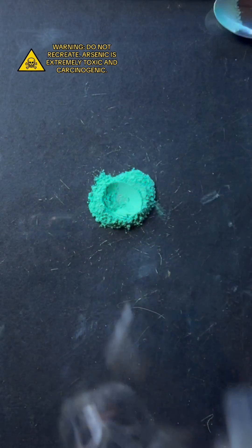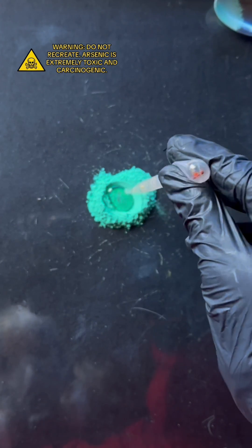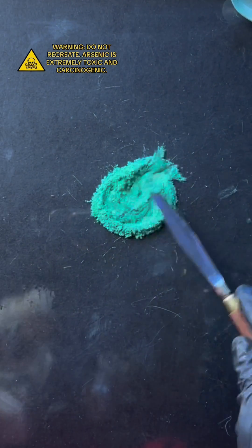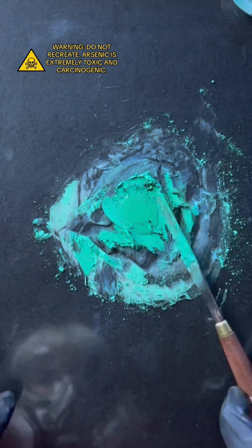Now, emerald green was first introduced in 1814 and was used by a lot of notable painters in the 19th century. But what's fascinating is that this beautiful color made from copper and arsenic wasn't just used to create paint.